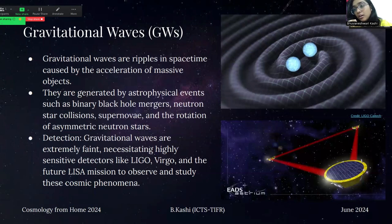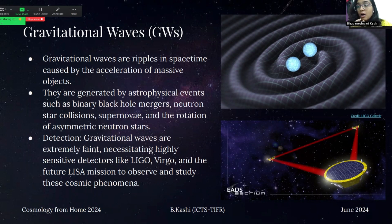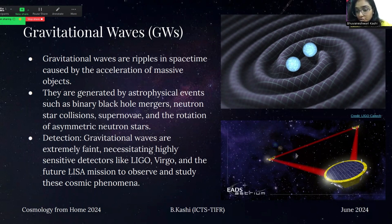So there are dedicated observatories like LIGO, Virgo, Kagra, etc. to detect these kinds of waves. And there are future missions which are dedicated. For example, LISA is a space-based observatory which has three spacecraft in a triangular formation as seen in this picture. It's a very efficient way to detect low frequency ranges of these gravitational waves, and we will see it in detail in this presentation.